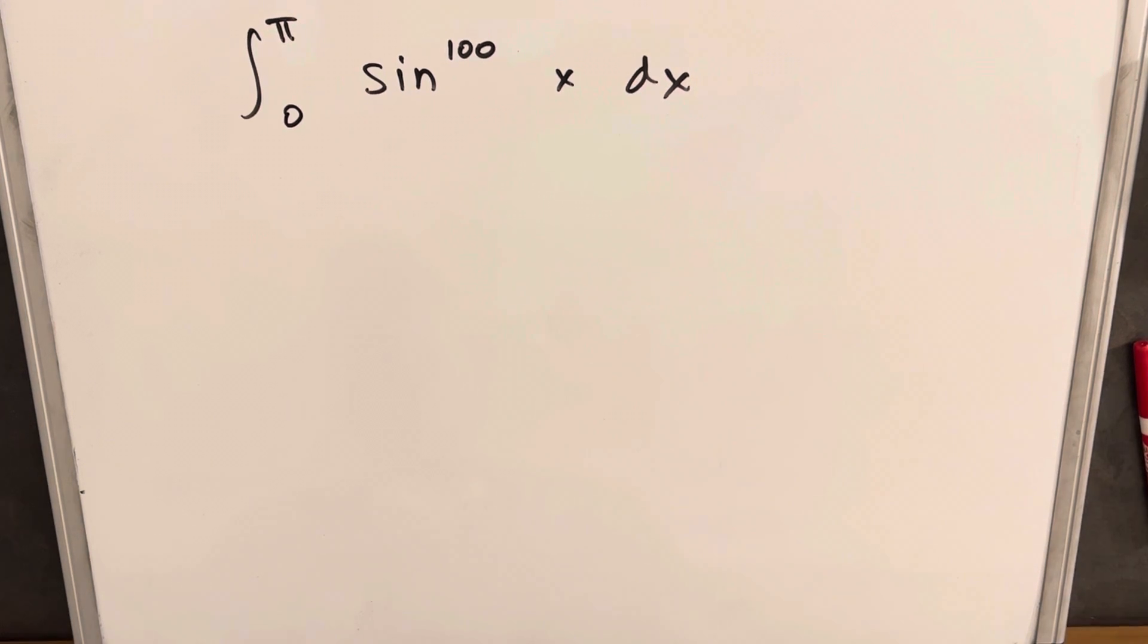Hey, we have here the integral from 0 to pi of sine to the 100th x dx. The scary part here is this exponent. We have this 100 for an exponent, and that's going to be hard to deal with. So before I do anything, what I want to do is just go over the power reduction formula for sine.